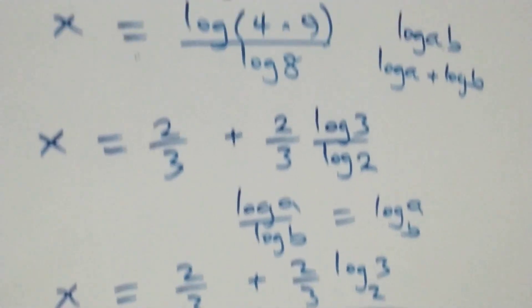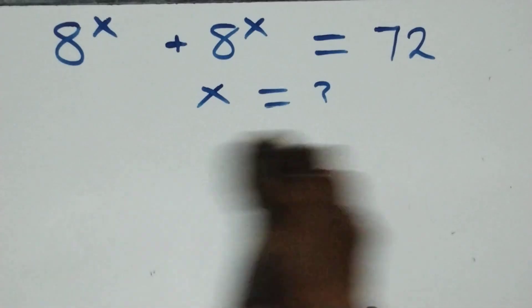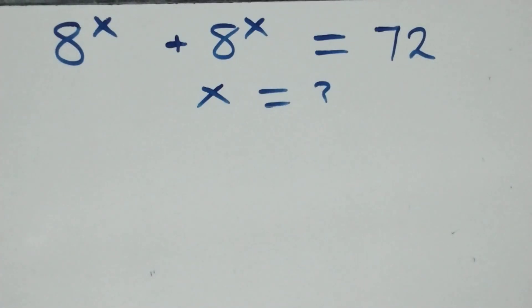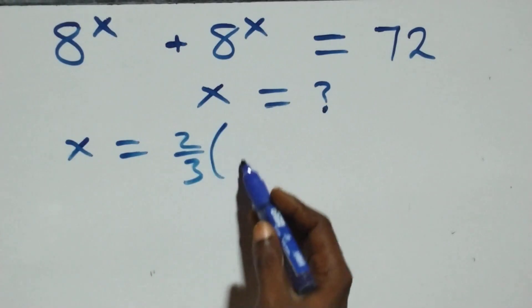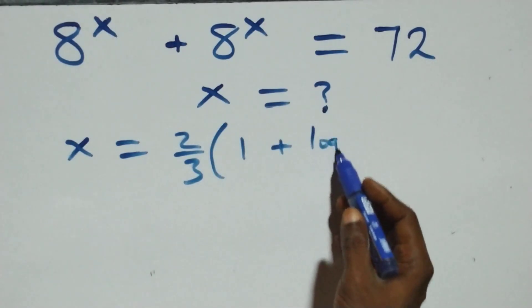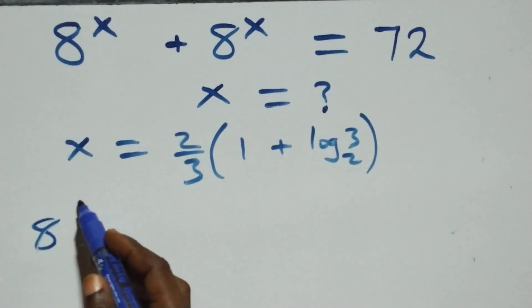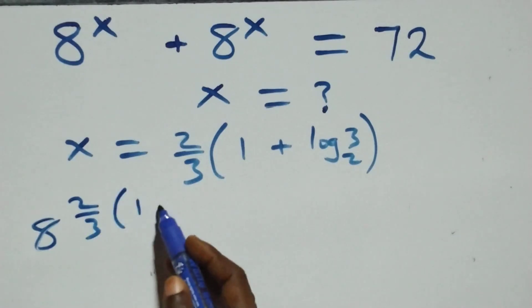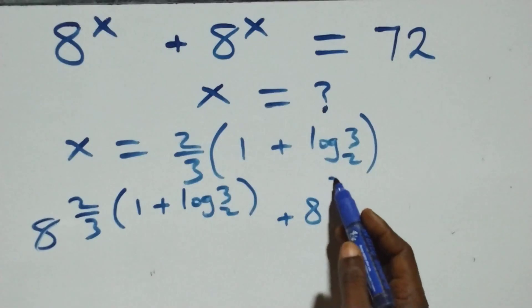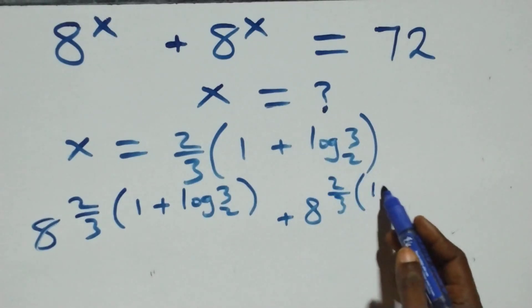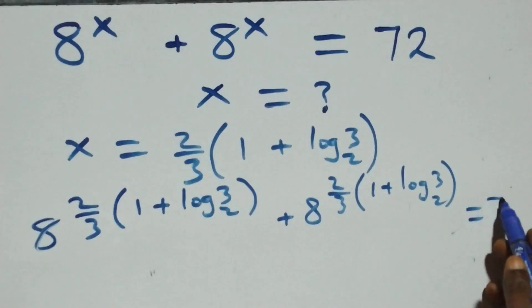Let's check whether this satisfies the given problem. We substitute the value of x, which is x equals 2 over 3 into bracket one plus log 3 to base 2. So all we have becomes 8 raised to power [2 over 3 times (1 plus log 3 base 2)] plus 8 raised to power [2 over 3 times (1 plus log 3 base 2)] — is this equal to 72?